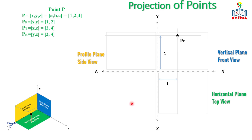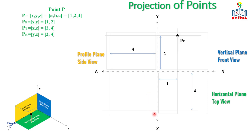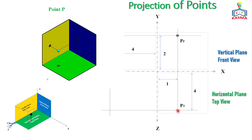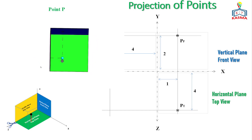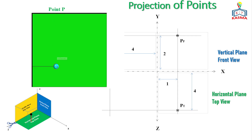For the top view, we also use the z dimension, which is 4 meters. The depth or z dimension is common to both the profile plane and the horizontal plane, so they share the same magnitude. Measuring 4 meters in the z direction gives an intersection point on the horizontal plane — this intersection is the top view of point P. From the 3D model you can see the top view is 1 meter in x and 4 meters in z.